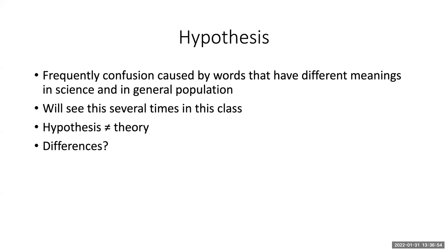The vocabulary of science is important — words can have different meanings in different contexts, and every field has its own vocabulary. A key example: in science, the word 'hypothesis' is not the same as 'theory,' yet the general population uses the word 'theory' loosely. A lot of times when people say 'my theory is,' what they're really talking about is a hypothesis.